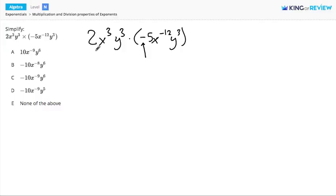So all we really have to do is multiply, and to multiply two exponential expressions, we need to look at which numbers and variables go together.